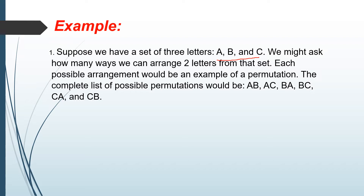Each possible arrangement would be an example of a permutation. The complete list of possible permutations would be: AB, AC, BA, BC, CA, and CB. So those are the possible permutations.